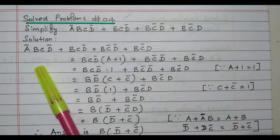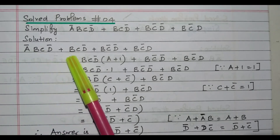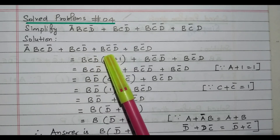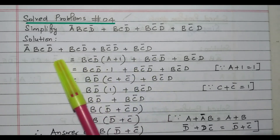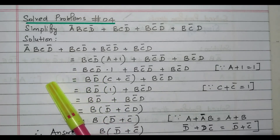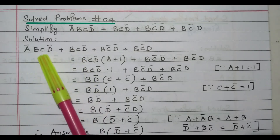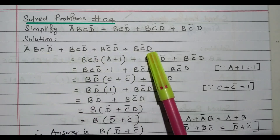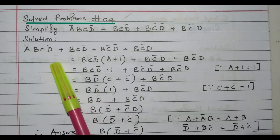The expression given for Problem 1 is: ābcd̄ + bcd̄ + bc̄d̄ + bc̄d. There are four terms available and we need to simplify this expression. First we will take the most common terms outside so that we can go for further simplification. We need to identify which term is most common — here four variables are available in one term, and three variables in others.